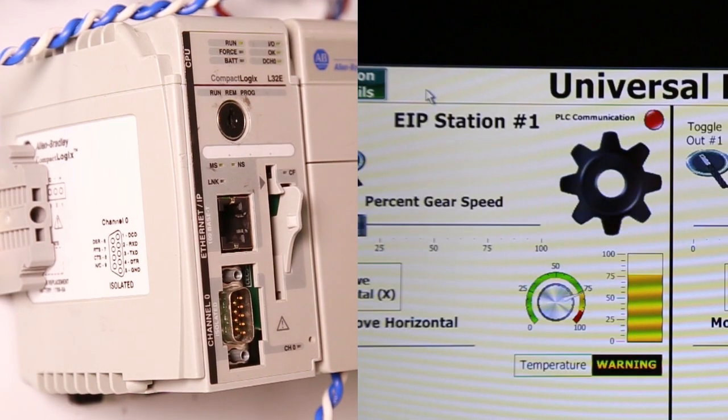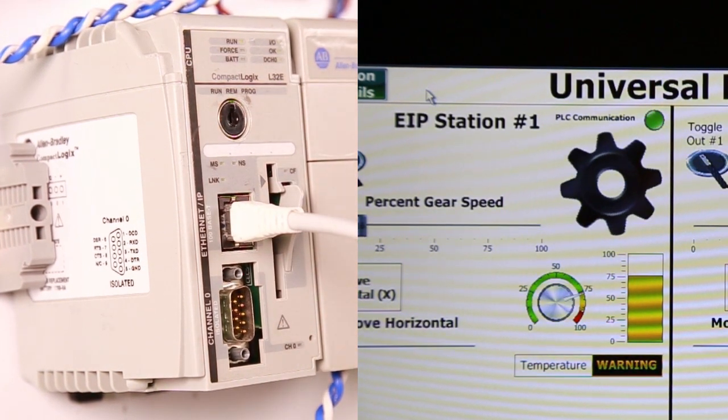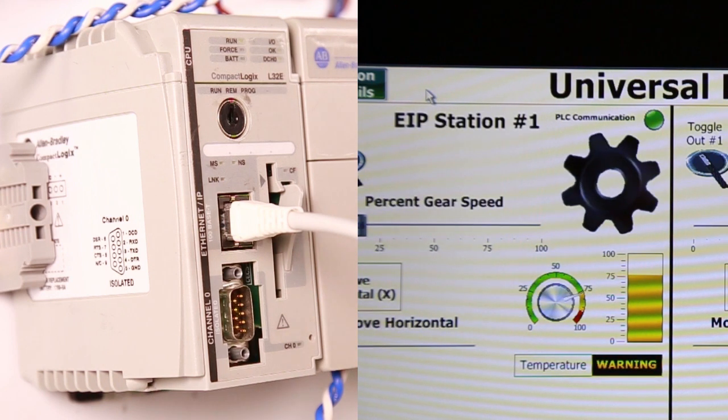And plugging the Rockwell controller back in, again we see Phoenix Contact's Universal HMI detects the presence of the Ethernet IP controller and begin updating its fields.